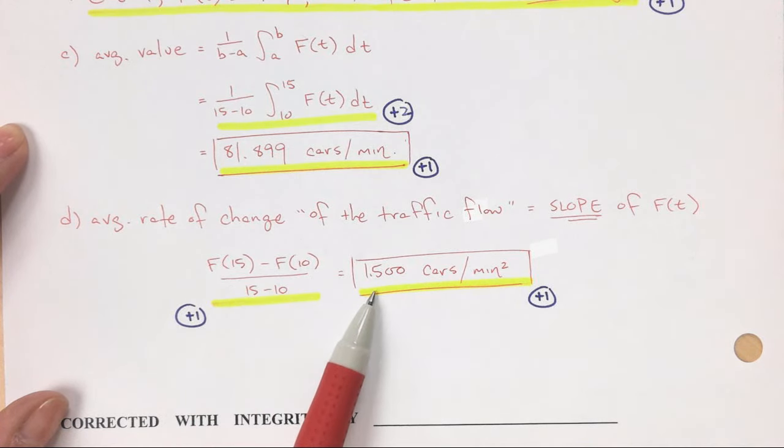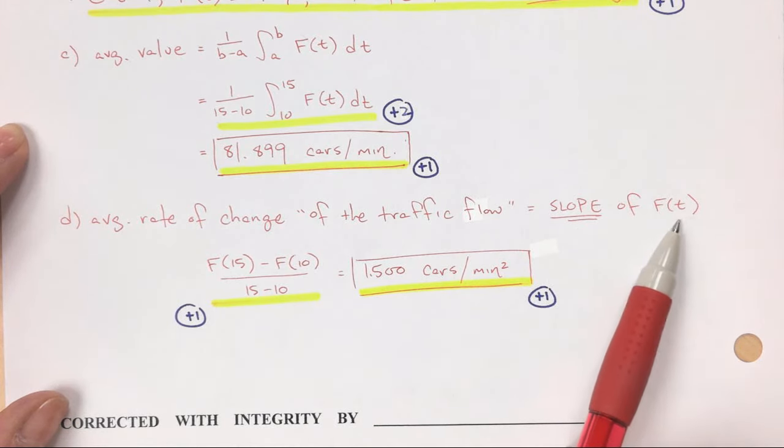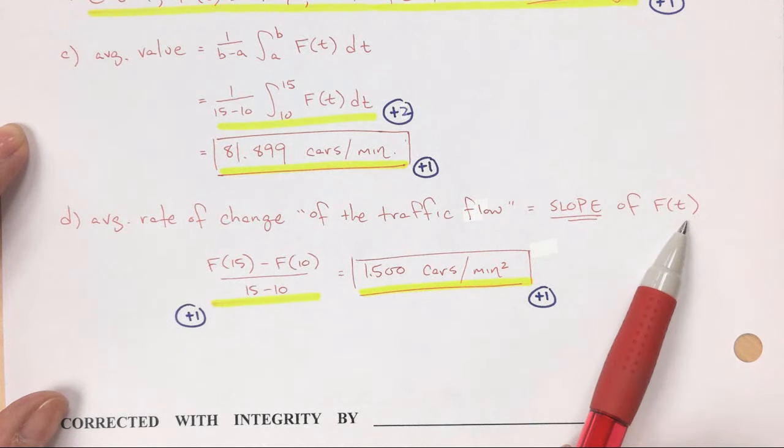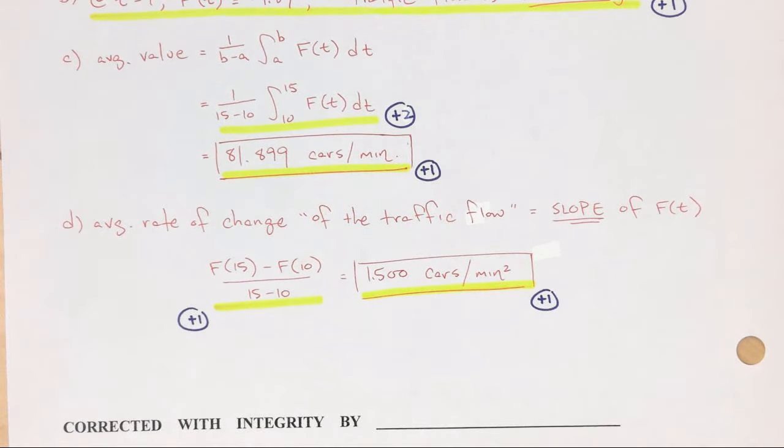And I get 1.5. This is a slope of a rate. So if I have a slope of a slope in minutes, so before it was cars per minute, now it's cars per minute per minute. So that's why it's cars per minute squared. So there you go for rates of change. Good luck.